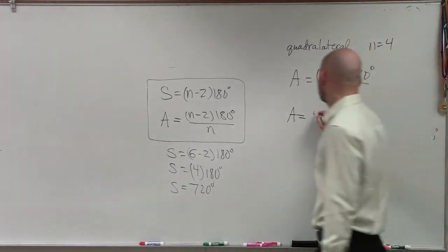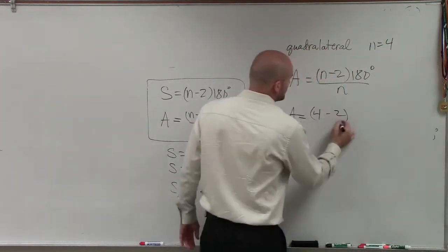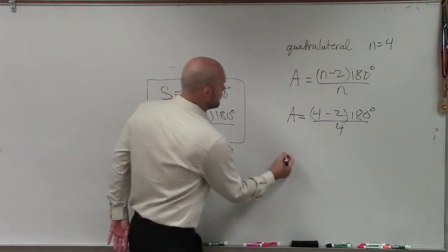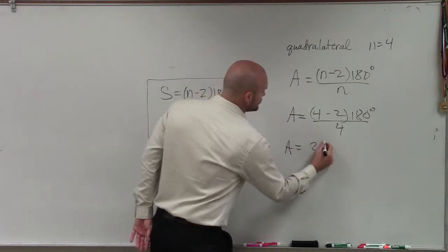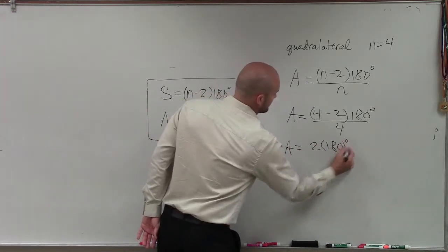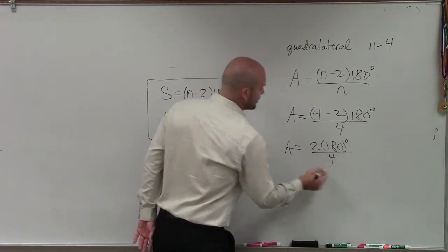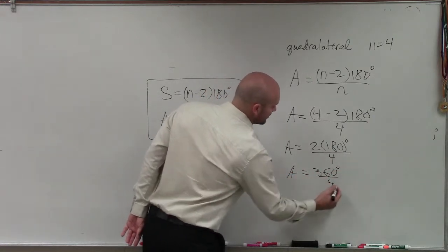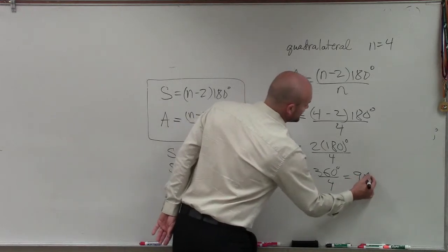So now I just do 4 minus 2 times 180 degrees divided by 4. So therefore, a equals 2 times 180 divided by 4. So therefore, a equals 360 degrees divided by 4, and that just equals 90 degrees.